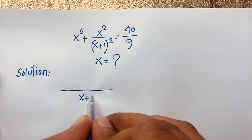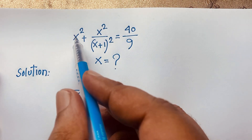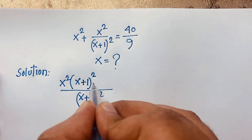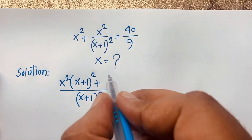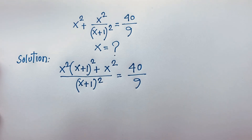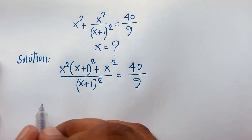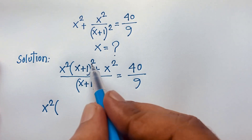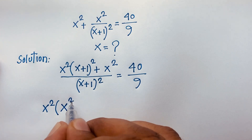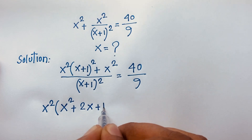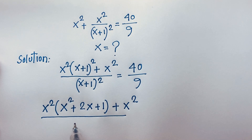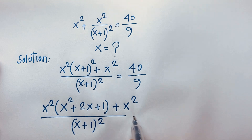Here you can see the least common value is (x+1)² . This gives us x² times (x+1)² plus x² all over (x+1)², equal to 40 over 9. Now, using the formula (a+b)² = a² + 2ab + b², this expression becomes x² + 2x + 1 plus x², all over (x+1)², equal to 40 over 9.